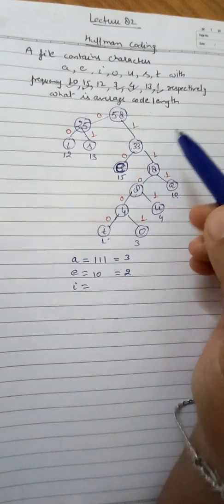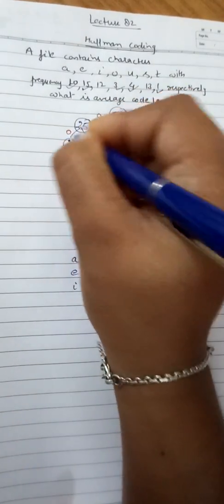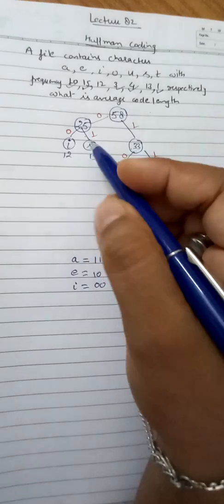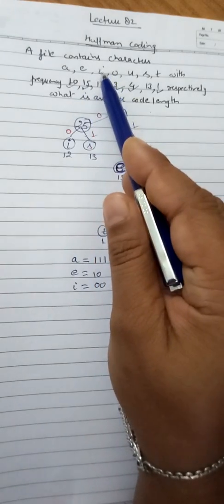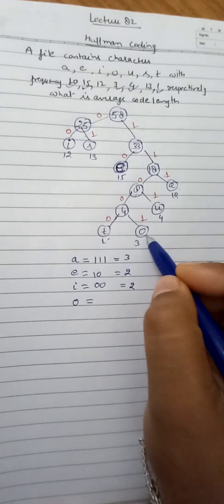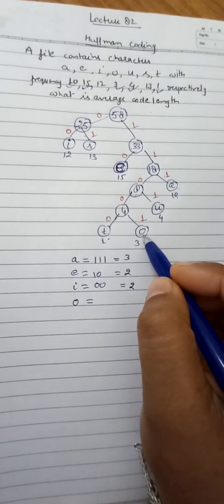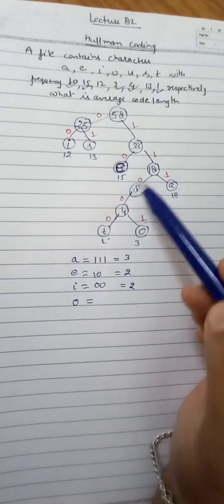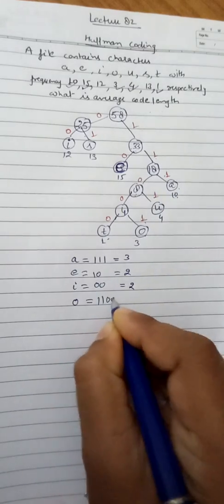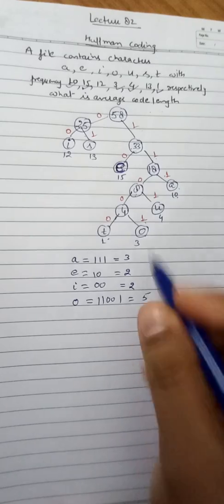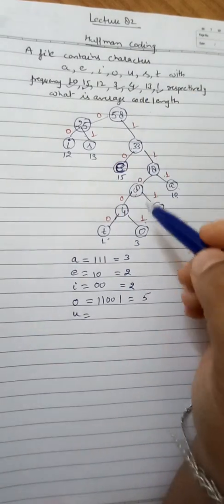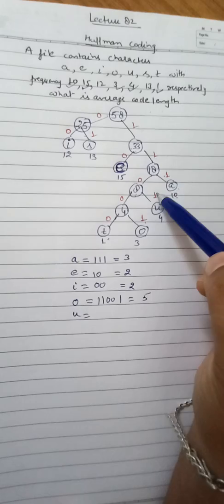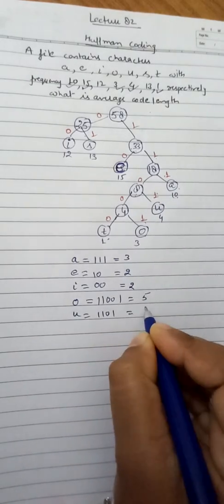For i, the number of bits is 2. For o, tracing the path gives 5 bits. For u, tracing the path gives 4 bits.